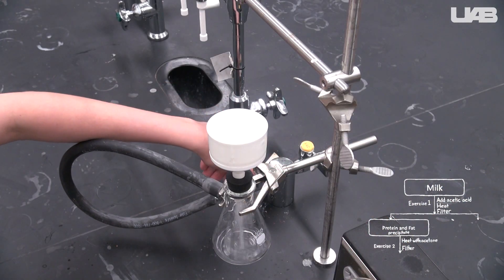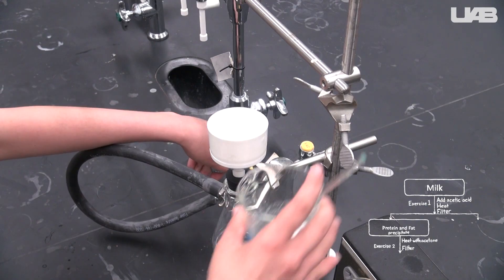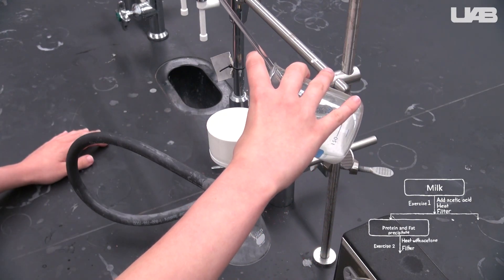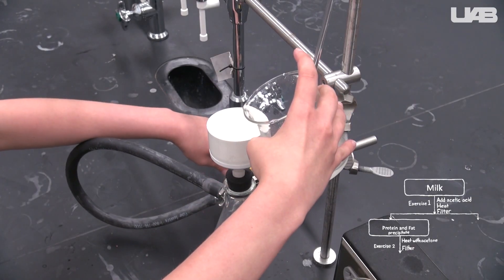Turn the vacuum on. Slowly decant as much of the liquid off before the solid starts going in because the filtration will slow down once the solid is there.